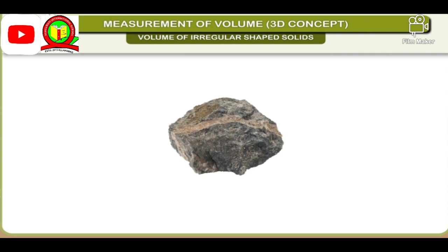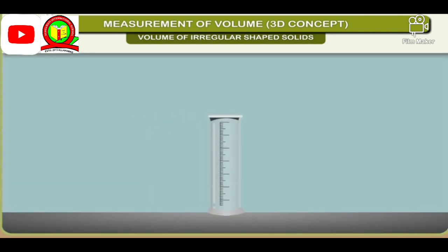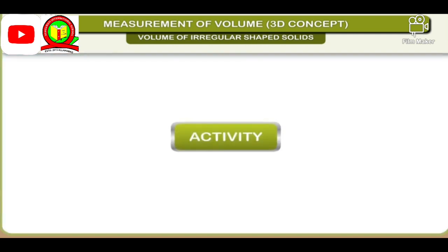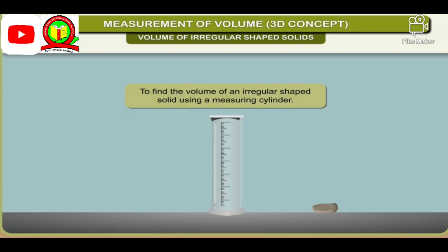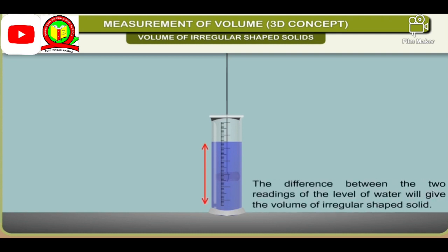Volume of irregular shaped solids: Bodies which have no regular shape are known as irregular shaped bodies. The volume of such bodies cannot be found by using any mathematical formula. For this we use measuring cylinders. The method of volume measurement is known as the displacement method, discovered by Archimedes. To find the volume of an irregular shaped solid using a measuring cylinder, immerse the solid completely in a measuring cylinder filled with water. Note the reading before and after immersing the solid. The difference between the two readings gives the volume of the irregular shaped solid.